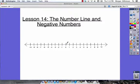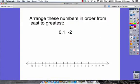Now when we have negative numbers, positive numbers, and 0, we need to be able to arrange them in order. One question might look like this: arrange these numbers from least to greatest: 0, 1, and negative 2. So if we plot those points, let's go ahead and do that. We've got 0, we've got 1, and we've got negative 2.